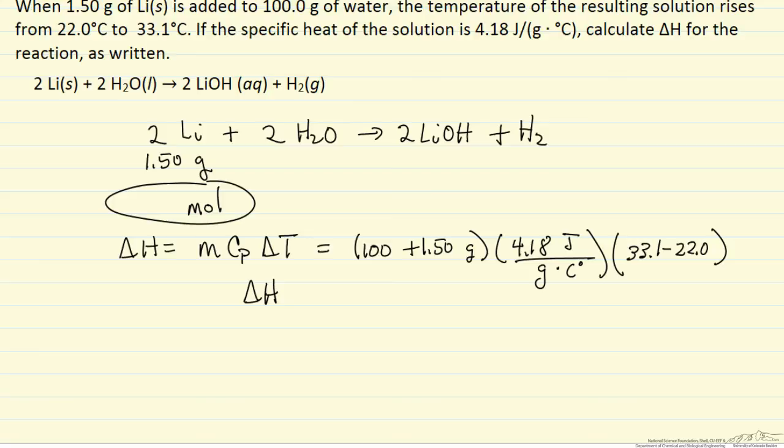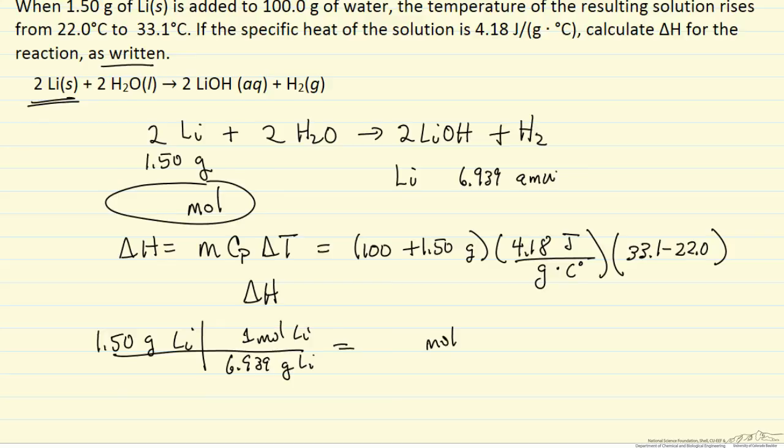We can then determine delta H for 2 moles since we want delta H for the reaction as written. So we're going to look up in a periodic table the atomic mass of lithium. We have 1.5 grams of lithium and we know there are 6.939 grams of lithium for 1 mole of lithium. So this is the moles of lithium.